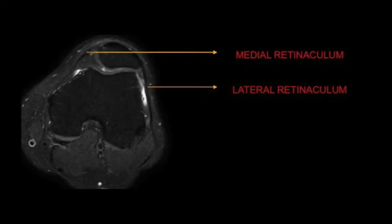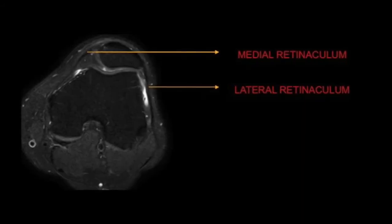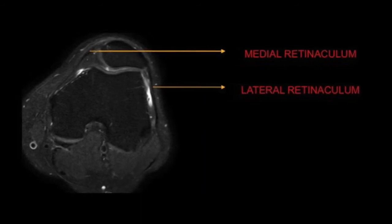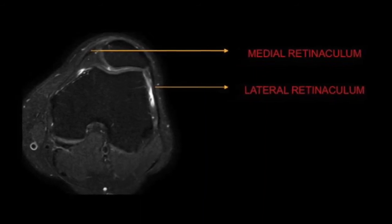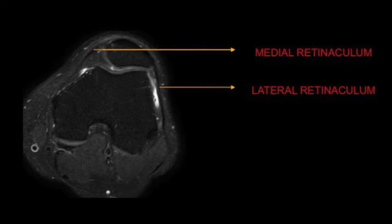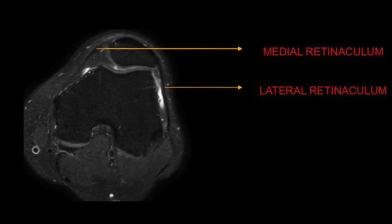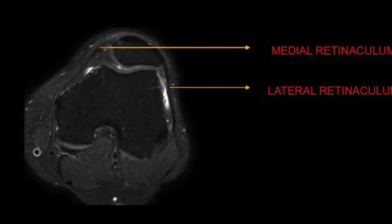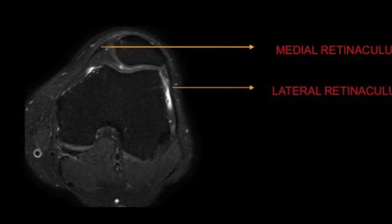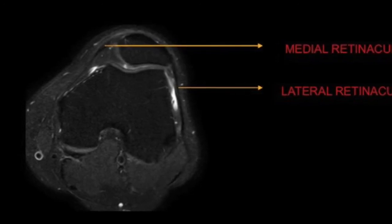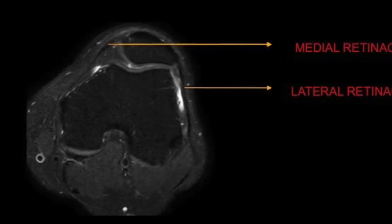Coming to the retinacula, there are two retinacula — the medial and the lateral patellar retinacula — which are nothing but fascicular extensions of the vastus medialis and lateralis muscles. They reinforce the muscles and preserve the normal patellar tracking.